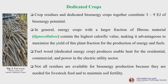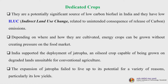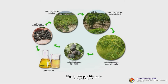Fuel wood and dedicated energy crops produce usable heat for residential, commercial, and electric utility sectors. Not all residues are available for bioenergy production because they are needed for livestock feed and soil fertility. They are a potentially significant source of low-carbon biofuel in India and have low ILUC — indirect land use change — related to unintended release of carbon emissions. India supported the deployment of Jatropha, an oil seed crop capable of being grown on degraded lands unsuitable for conventional agriculture, but its expansion failed due to low yields.